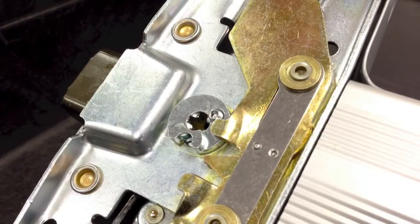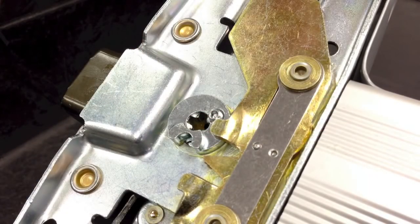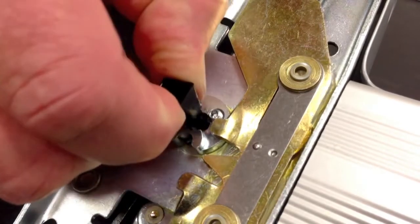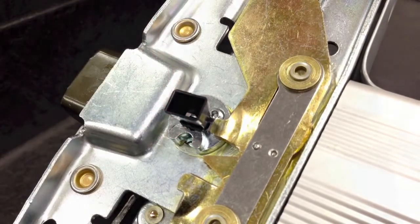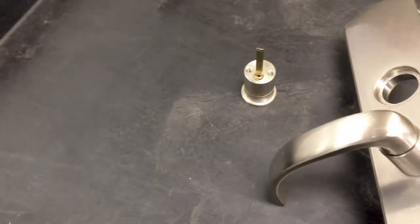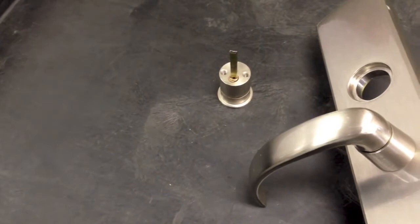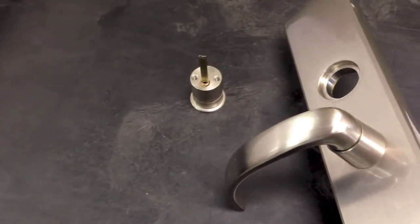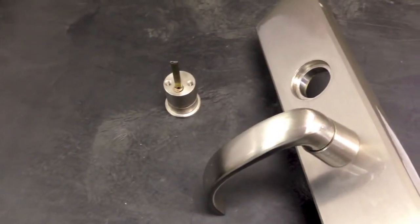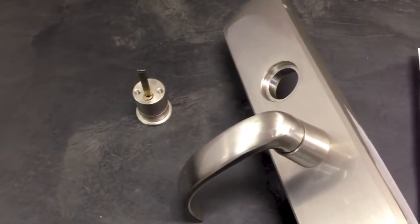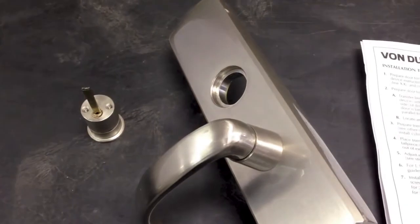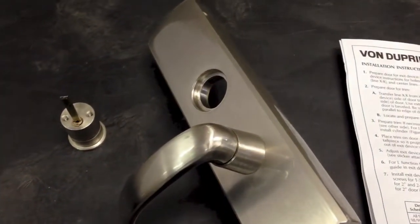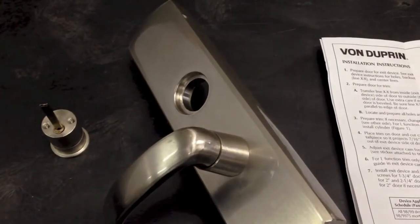If your exit trim has a cylinder, install the tailpiece guide into the center case, ensuring proper orientation to your tailpiece. The tailpiece in your cylinder may need to be cut to fit properly into the center case. When the trim and cylinder are properly installed, the tailpiece should extend beyond the door by 7 to 9/16ths of an inch. The trim installation instructions will help you cut your tailpiece to the proper length.